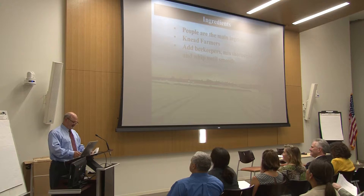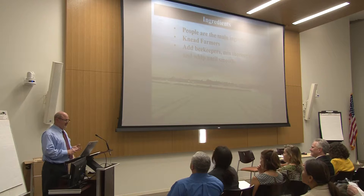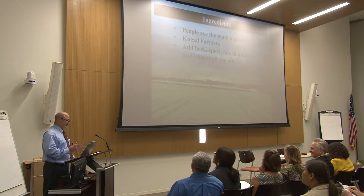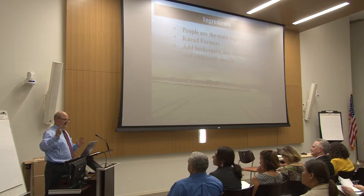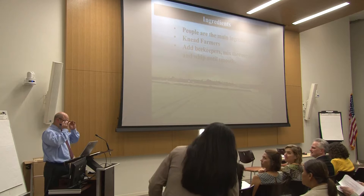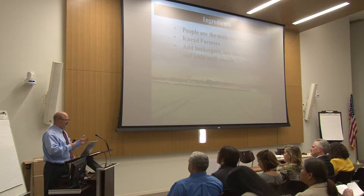You will leave here knowing not only how to develop a pollinator plan but also how to make a pretty good gumbo. The first thing with gumbo: you've got to get good ingredients. You can't start with terrible ingredients — and people are your main ingredient. You've got to have the right people in the room. You have to know who's reasonable, who can sit down, have a conversation, be open-minded, and try to understand the issues each side is facing.